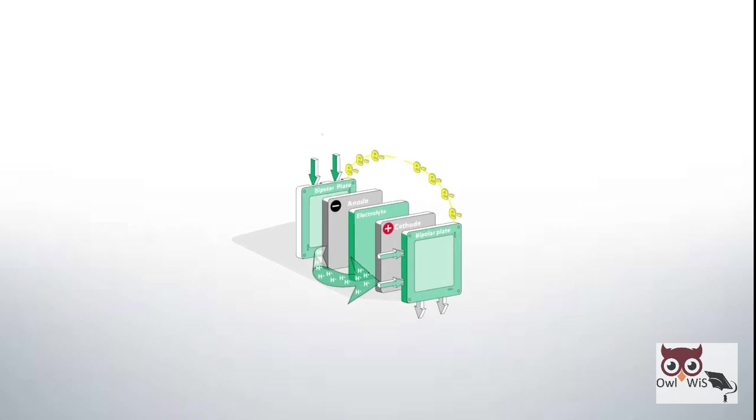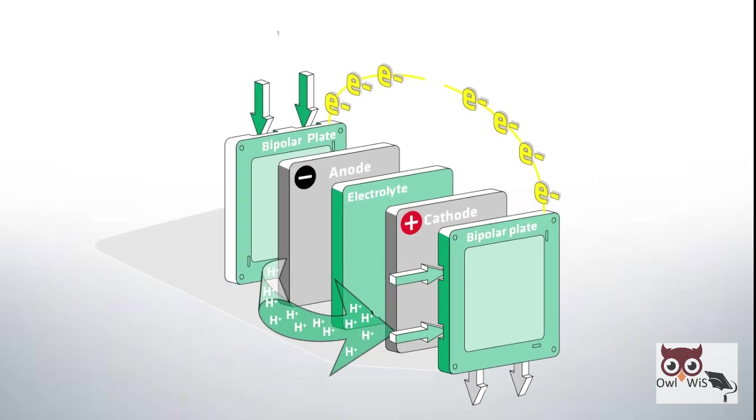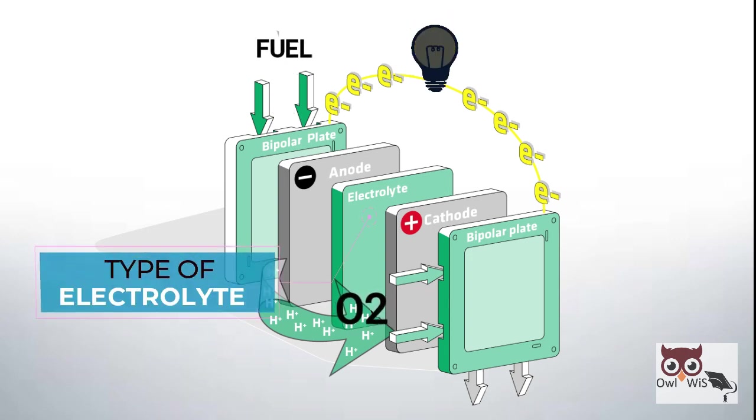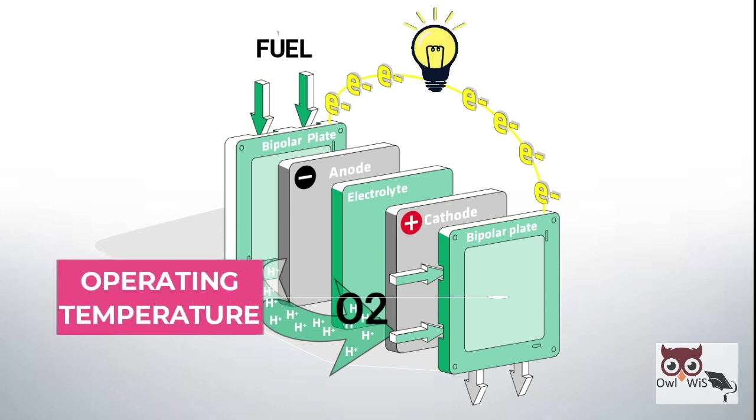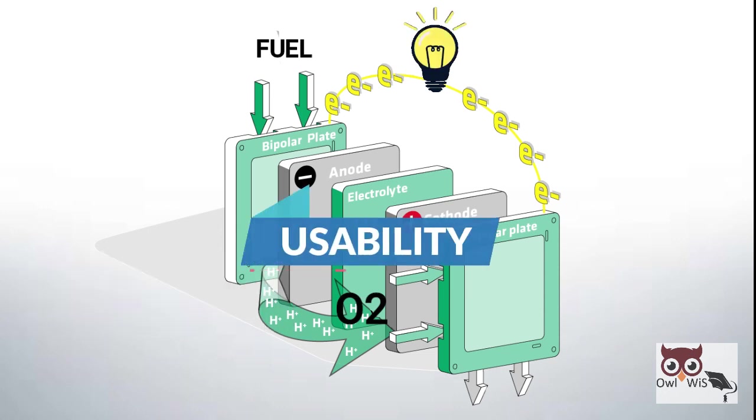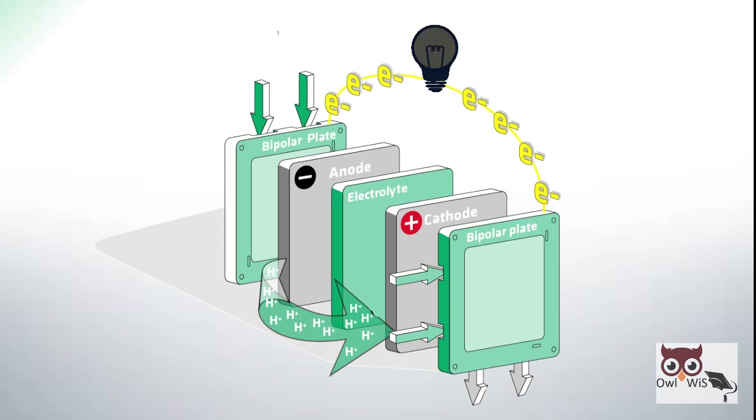Fuel cells are different from most batteries in requiring a continuous source of fuel and oxygen to sustain the chemical reaction. The type of electrolyte utilized, its operating temperature, and potential usability describe and classify a fuel cell.